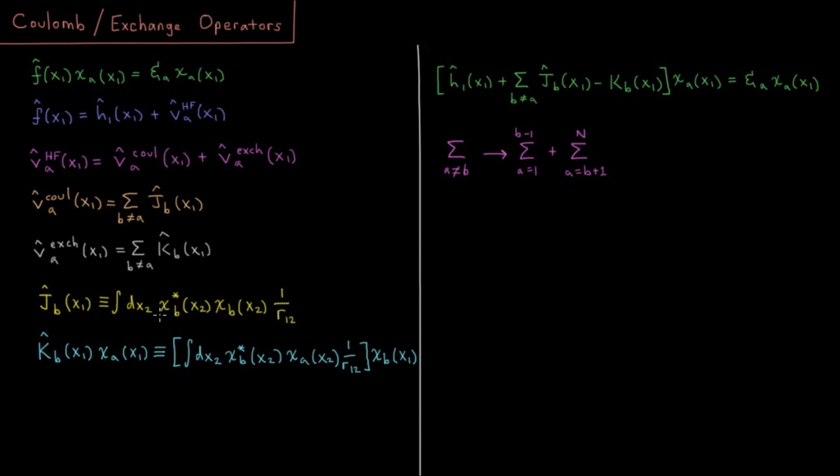So we notice that the complex conjugate is still chi star B for electron two. But for the non-complex conjugate, for the regular spin orbital, we have that it now has been exchanged and electron two is in spin orbital A and electron one is in spin orbital B as they have been exchanged by this exchange operator.